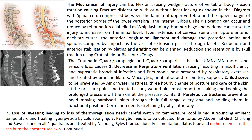Secondary to injury, there can be hemorrhage and edema, which can cause the injury level to increase from the initial level. More movement in an unstable spine can also increase the initial injury level and should be avoided at all costs. Hyperextension of the cervical spine can rupture the anterior neck structures, the anterior longitudinal ligament, and damage the posterior lamina in the spinal complex by impact.